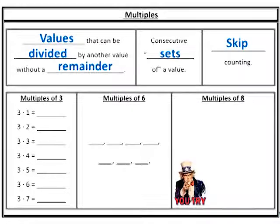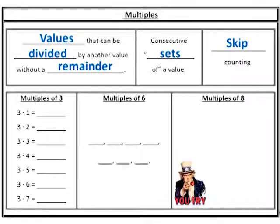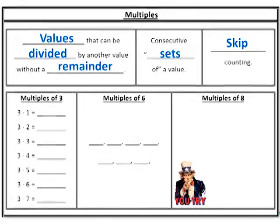When your teacher was telling you how to count by twos — two, four, six — or by fives — five, ten, fifteen — what they were really doing is teaching you multiples. Five times one is five. Five times two is ten. Five times three is fifteen. They were teaching you your multiples.